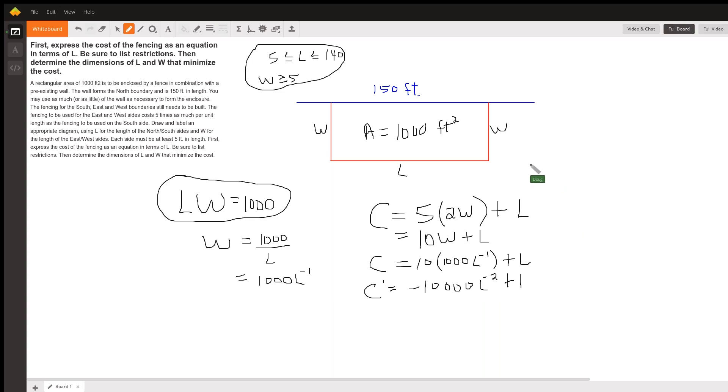And we've got 10,000 over L squared equals one. So L squared equals 10,000.